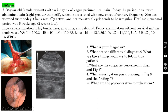Case number two: a 28-year-old female presents with a two-day history of vague periumbilical pain. Today the patient has lower abdominal pain, right more than left, associated with new onset of urinary frequency. She also vomited twice. She is sexually active and her menstrual cycle tends to be irregular. Her last menstrual period was six weeks ago — two weeks already late. On examination, right lower quadrant tenderness, guarding and rebound are present.